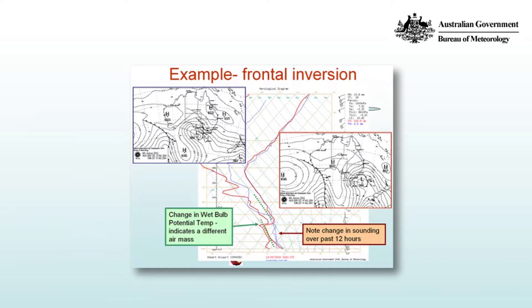It also shows significant drying during that period, but there's a saturated layer above 900 hPa and below 700 hPa. Indicated also are the wet bulb potential temperatures, and you can see that they're very different, representing two different air masses. So this inversion has been produced by the passage of a front.